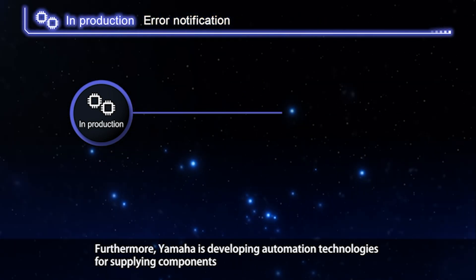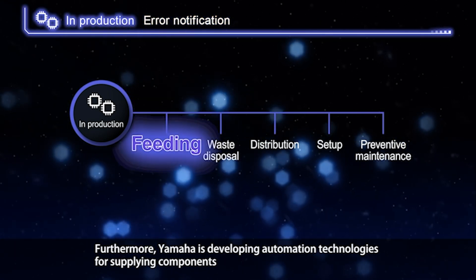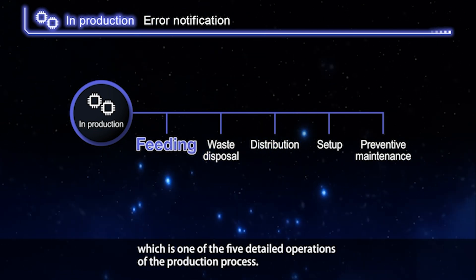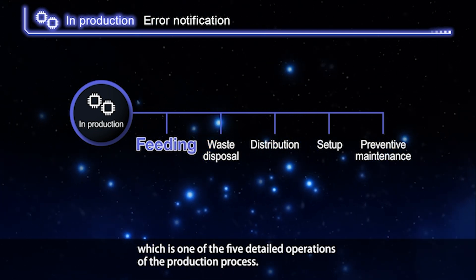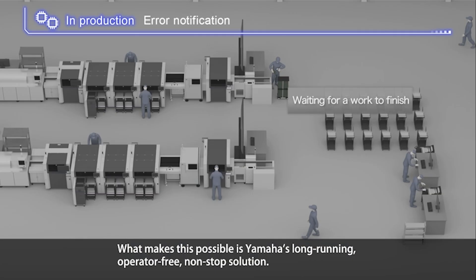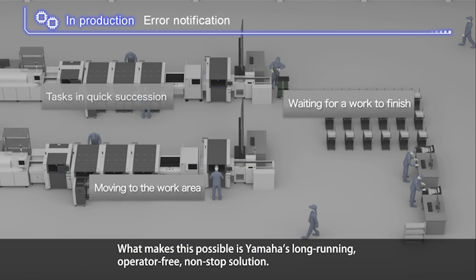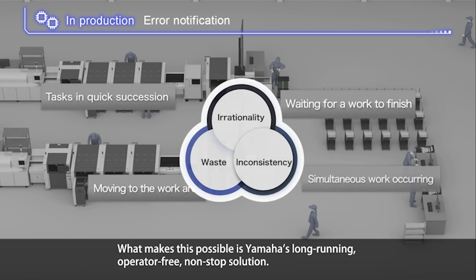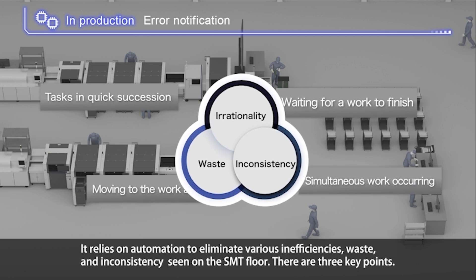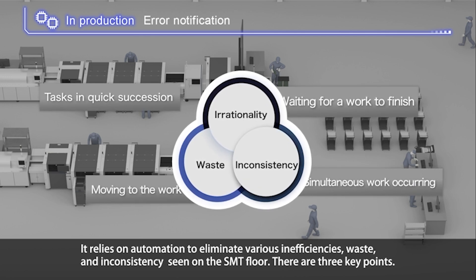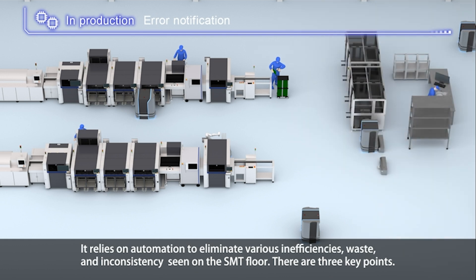Furthermore, Yamaha is developing automation technologies for supplying components, which is one of the five detailed operations of the production process. What makes this possible is Yamaha's long-running, operator-free, non-stop solution. It relies on automation to eliminate various inefficiencies, waste and inconsistencies seen on the SMT floor.